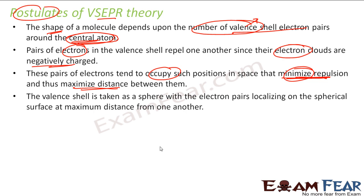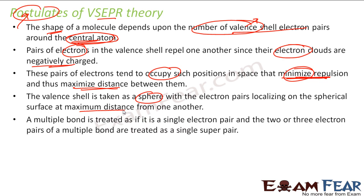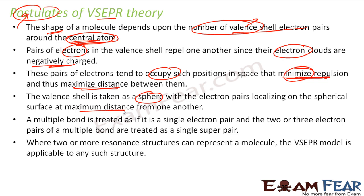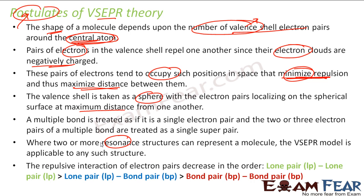According to this theory, the valence shell is treated as a sphere with electron pairs localized on the sphere at maximum distance from one another. In the Lewis concept there were issues with resonance structures, but the VSEPR theory works for all covalent structures.